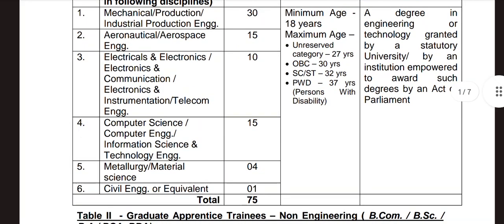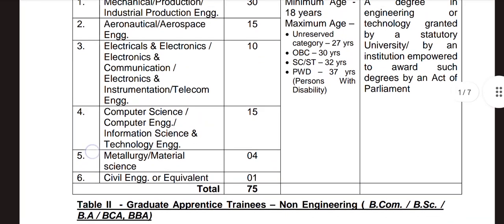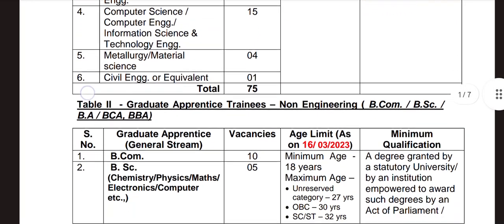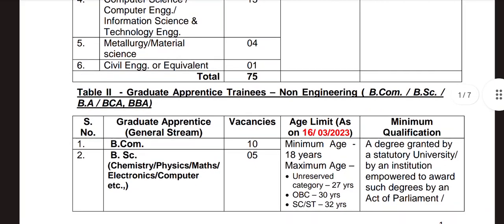Then there are 4 vacancies in Meteorology and Material Science. Then there are 75 vacancies in Civil Engineering — that is not graduate. Then there are 10 vacancies in BCOM, BA, Chemistry, Physics, Maths, Electronics.